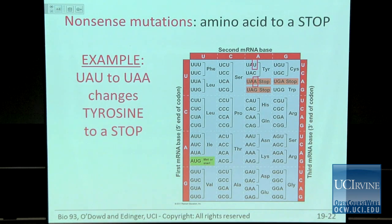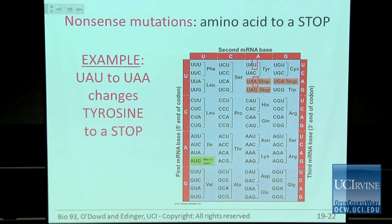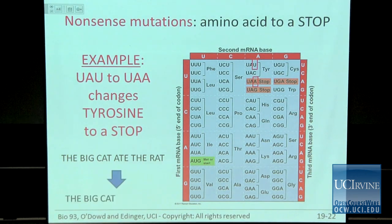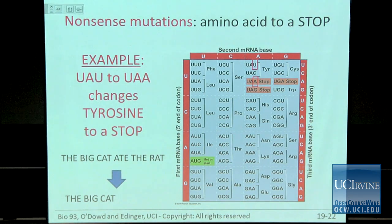Nonsense mutations change an amino acid codon to a stop codon. In the example, UAU changed to UAA — tyrosine to a stop. This can have large effects on protein function. Word example: 'the big cat ate the rat' becomes 'the big cat.' You don't know what was going to come next — it's truncated and could dramatically alter function depending on where in the protein the nonsense mutation occurs.